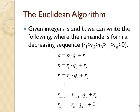And this sequence of remainders, r1, r2, r3, up to rn, are all greater than zero. However, they are decreasing.